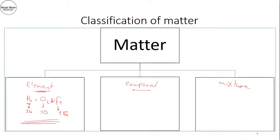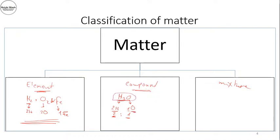A compound is made of atoms of different elements that are bonded together chemically with a fixed ratio. An example would be water — it is composed of hydrogen and oxygen with a fixed ratio of 2:1, giving H₂O. The chemical and physical properties of the compound are different from its parent elements; hydrogen and oxygen are gases, but water is a liquid.